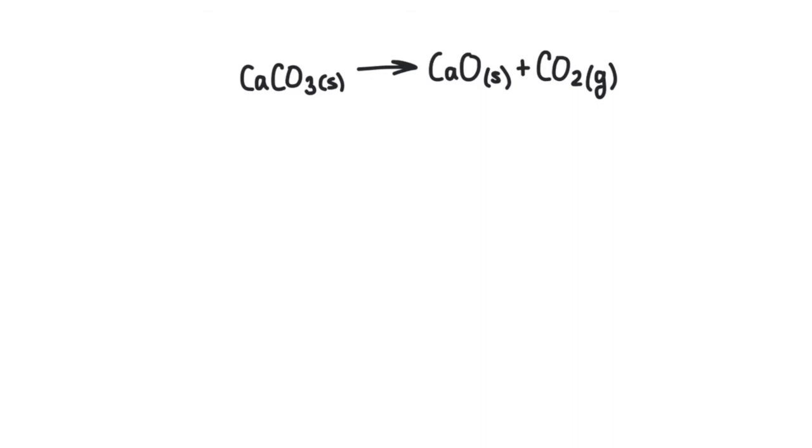Now, to determine the enthalpy change for this chemical reaction, what we can do is we can find all of the standard enthalpies of formation for all of the reactants and the products. Now, these are all generally in a big table. And if you have a textbook for chemistry, usually in the back of your chemistry textbook, there's going to be a table of all of these different values. They've already been determined for us.